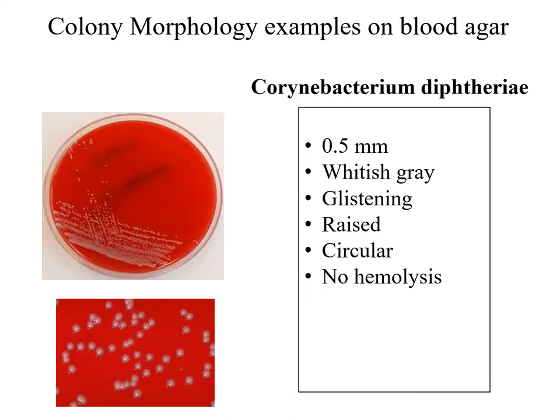This is Corynebacterium diphtheriae. The colonies are small — around 0.5 mm in diameter — whitish-grayish, and glistening. The colony is raised and circular, and it does not show any pattern of hemolysis on blood agar.